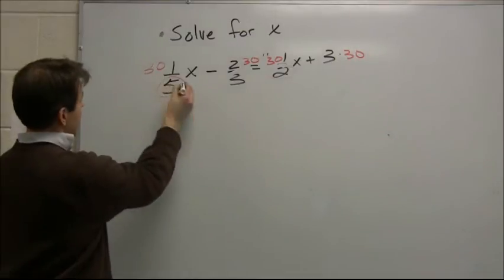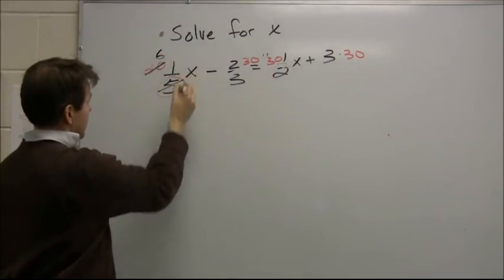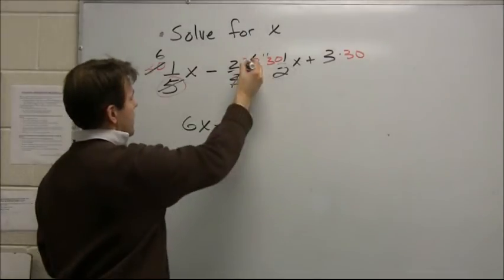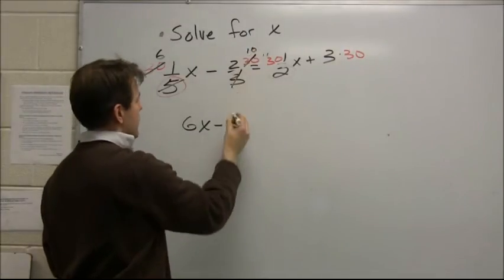Now, let's see what we've got here. Five goes into 30 six times, six times one x is six x. Minus, three goes into 30 ten times, two times 10 is 20.